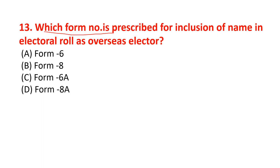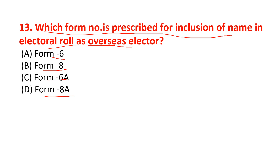Which form number is prescribed for inclusion of name in the electoral roll as an overseas elector? Options are Form 6, Form 8, Form 6A, and Form 8A. The correct option is option C — Form 6A.